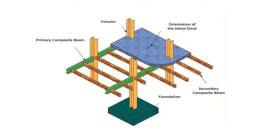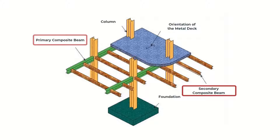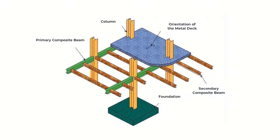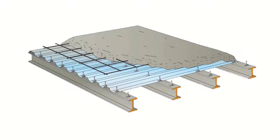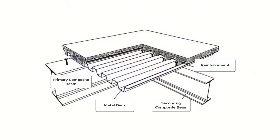In composite slab systems, the load-carrying units are the steel beams, divided into two groups: primary composite beams and secondary composite beams. The secondary composite beams transfer the loads of the metal deck and reinforced concrete to the primary composite beams. The load transfer between the metal deck and reinforced concrete is done through shear studs. The metal decks are placed in the same direction as the primary composite beams, perpendicular to the secondary composite beams.